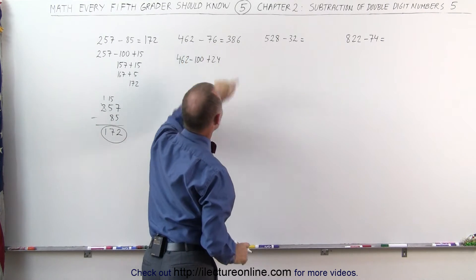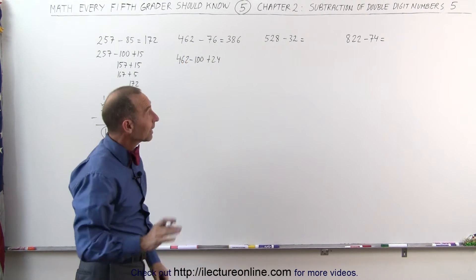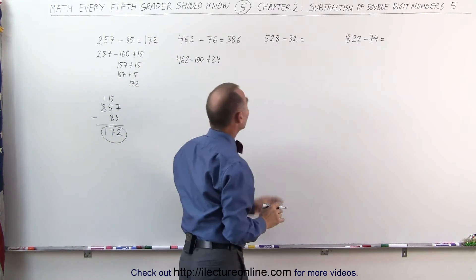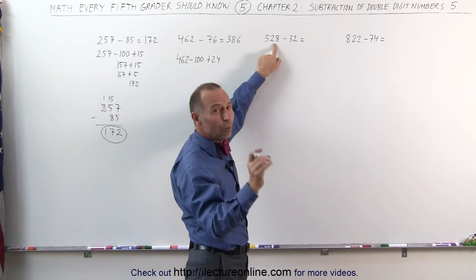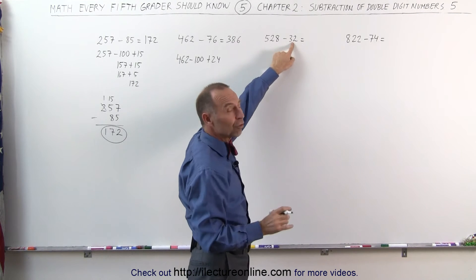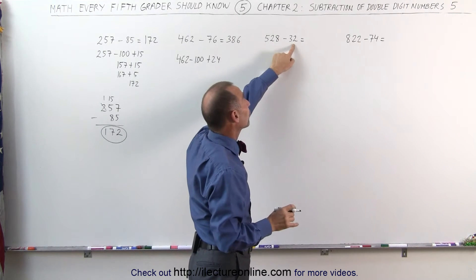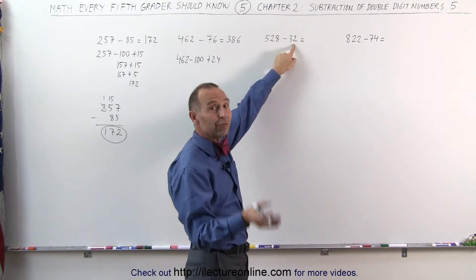462 minus 76 is 386. Kind of nice method. Same over here but slightly different, because here 32 and 28 are almost the same number. 32 is just 4 bigger than 28. So what I can do is I can subtract 28 and I can subtract 4 more.